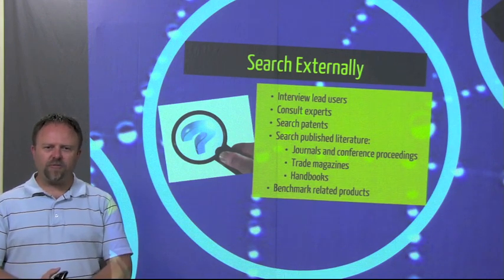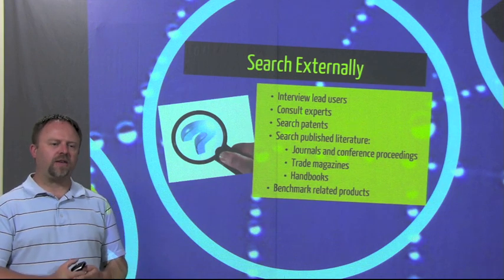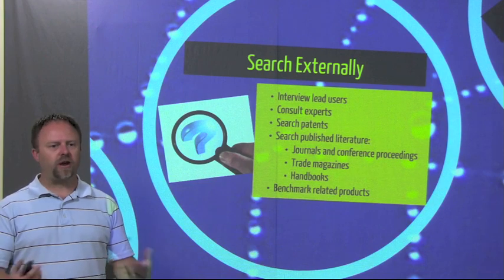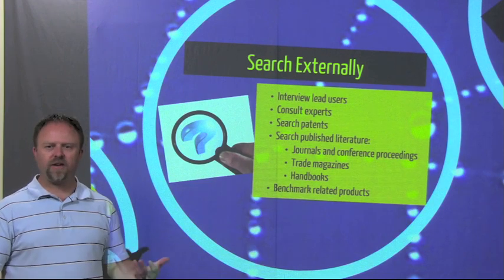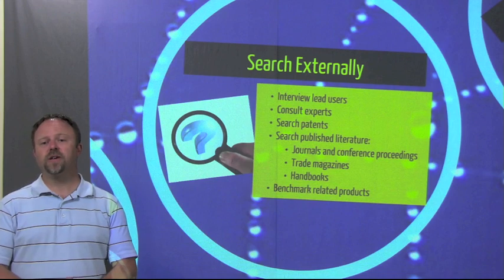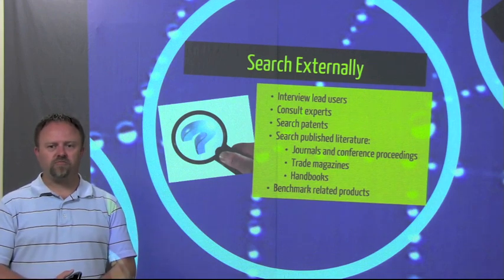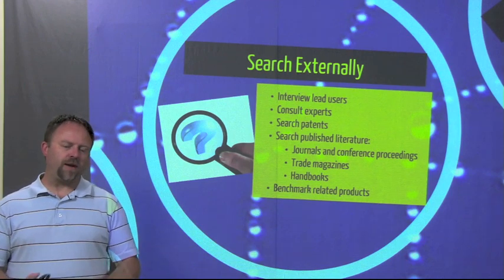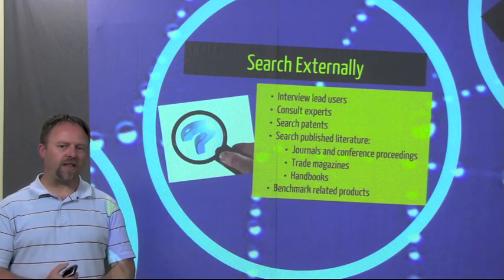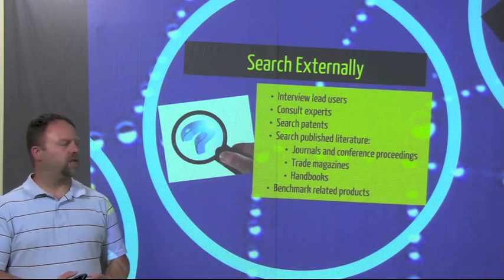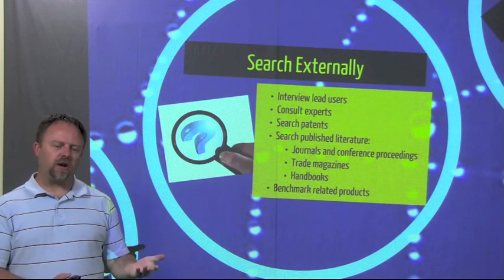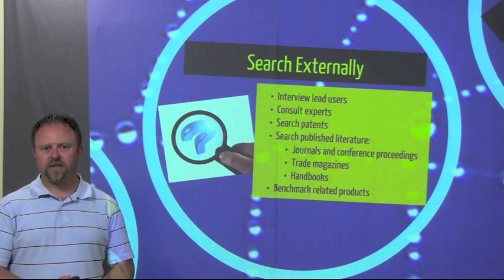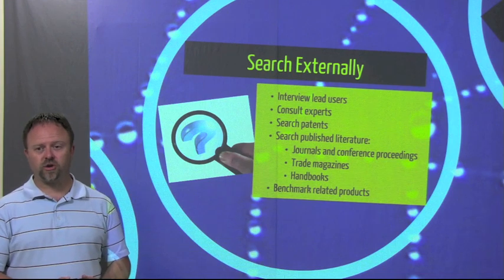So the next step would be to search externally. And this is looking at what is out there already that's related to our design. So we can interview people that already use that product to see if they have ideas. We can consult experts in the field that maybe have designed these products for a long time already. We can look through patents through the patent office that's available online. Patents are protected for a certain period of time, but after that time you can use those ideas freely, or you can pay royalties to use current patents.